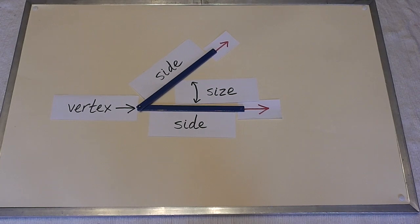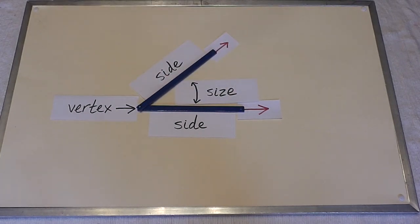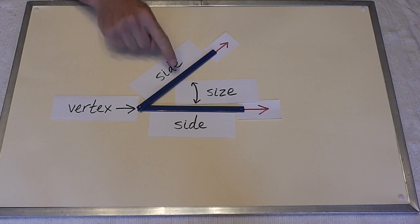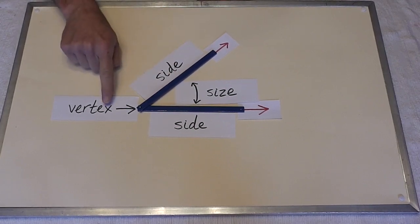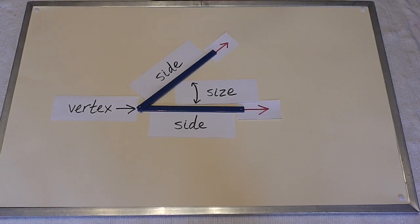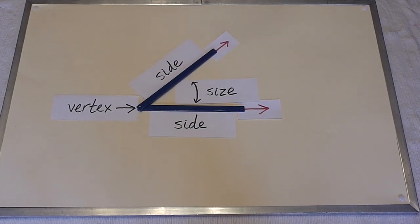So, quick review. Two rays that have a common origin form an angle. An angle has parts. An angle will have two sides. It will have a vertex, which is the point where the two sides meet. And it will have a size.